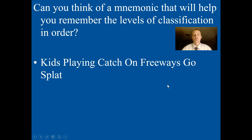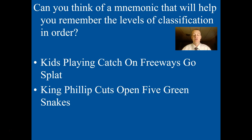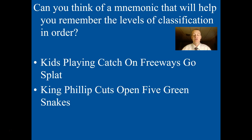Here's one you can remember pretty easily: 'Kids playing catch on freeways go splat.' If you close your eyes and imagine that, it's horrific, but maybe it'll stick in your mind. Each letter represents the first letter of the classification scheme — Kids for kingdom, Playing for phylum, and so on. I've also seen people use 'King Philip cuts open five green snakes,' which is more of a traditional mnemonic. Another one is 'Kids pouring chlorine on friends get smacked.' Whichever one works for you is great.